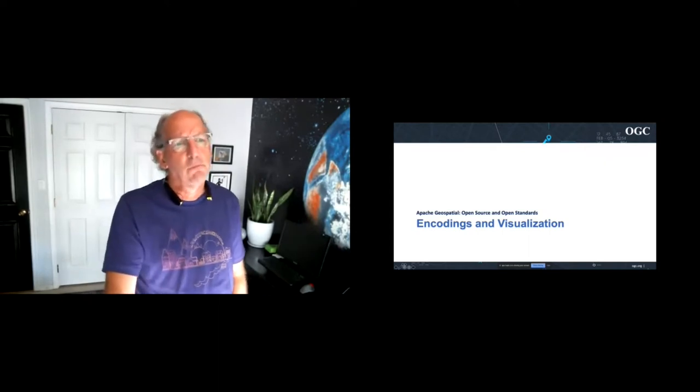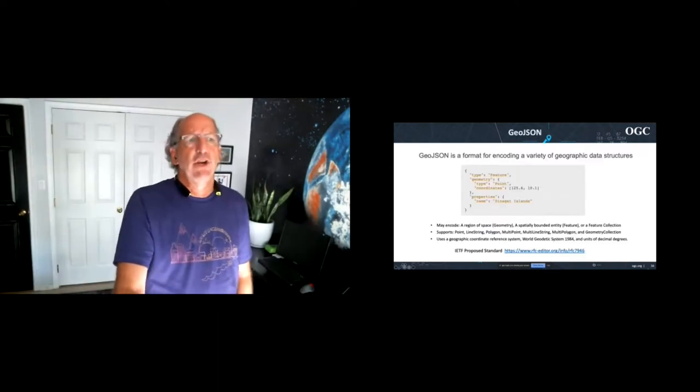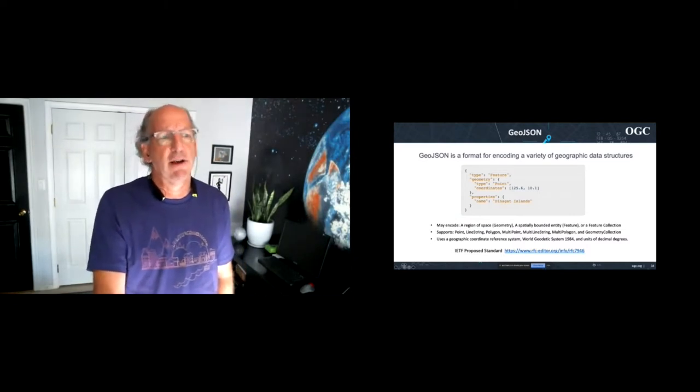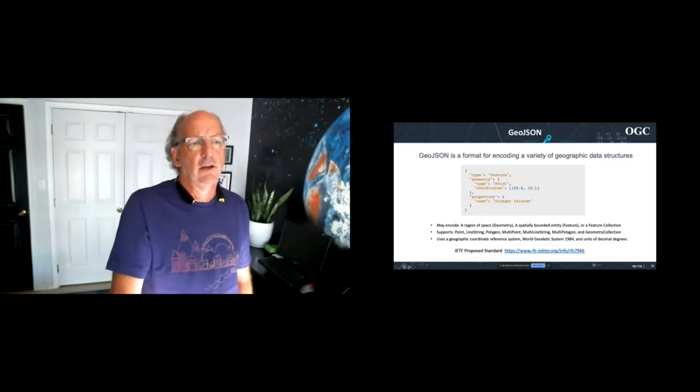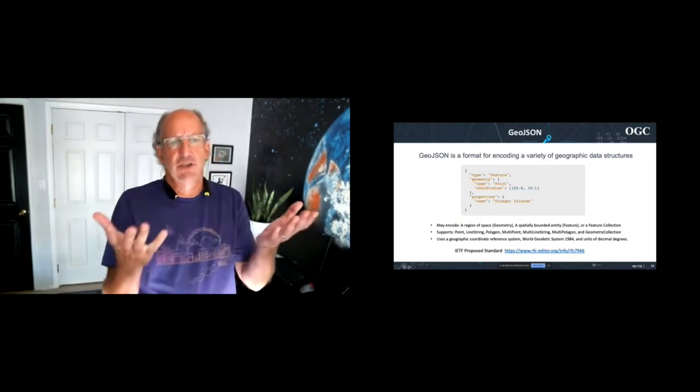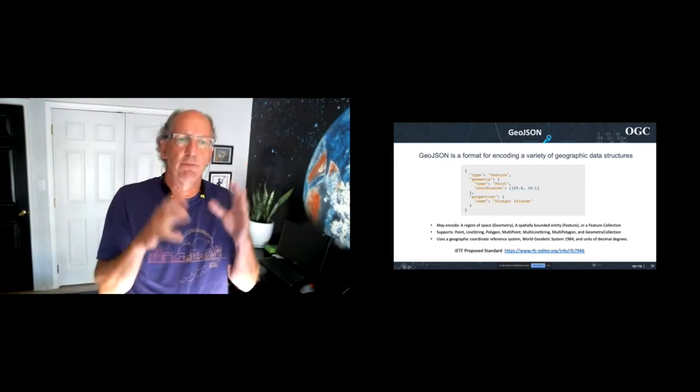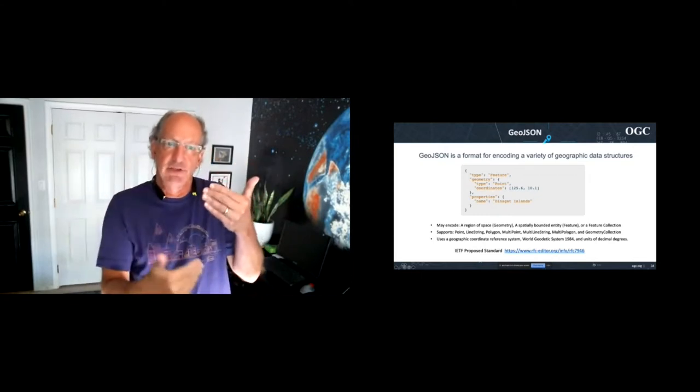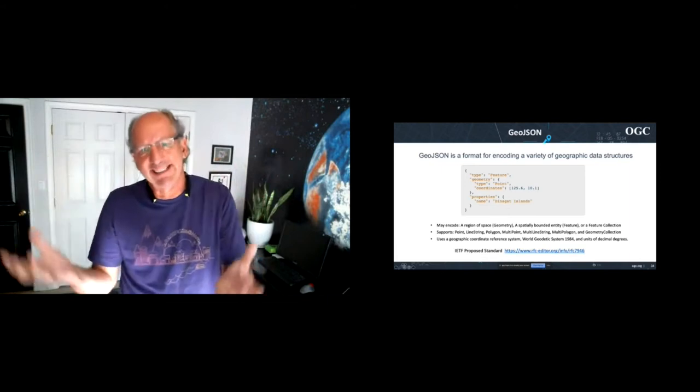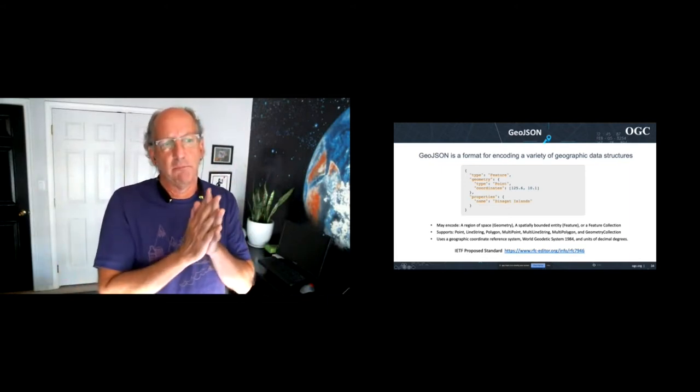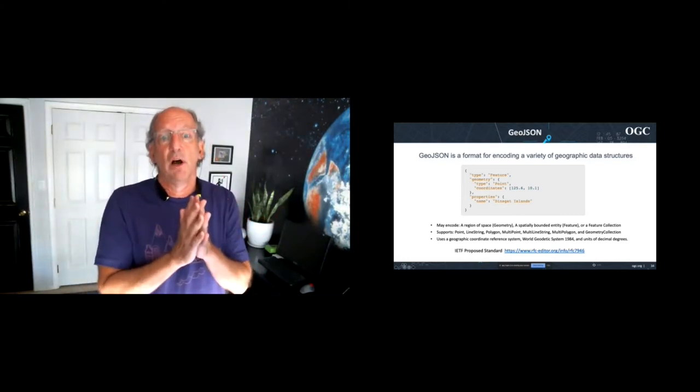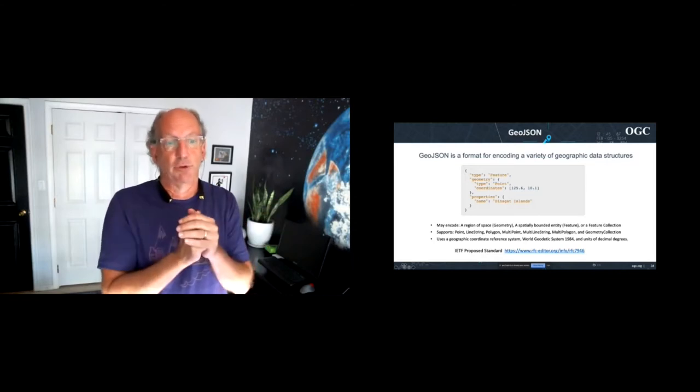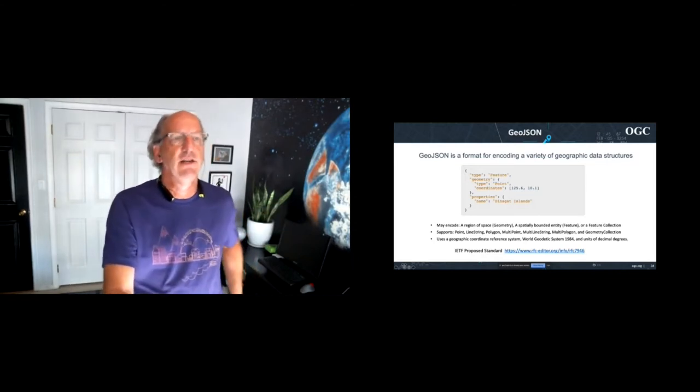Encodings and visualizations. So GeoJSON, great format for encoding a variety of geographic data structures. It's a JSON 5, you know, written in JSON. It can encode a region of space, that is a geometry. It can encode a spatially-bounded entity, a feature that has geometries and attributes, or it can be a collection of features. And you see the types of geometries that support points, line strings, polygons, the list there. It uses WGS84 and units of decimal degrees. And you can find that spec at that link at IETF.